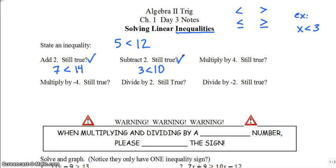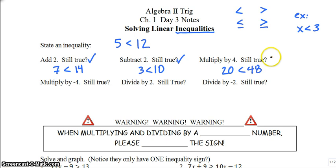What about multiplying by 4? 5 times 4 is 20, 12 times 4 is 48. Is 20 less than 48? Yes, that works. So some basic math operations don't affect your inequality.